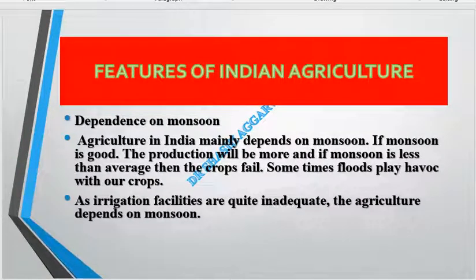Another feature is dependence on monsoon. Since irrigation facilities are not sufficient, Indian agriculture heavily depends on the monsoon. When rainfall is good, crops are good; but when there is excess rainfall there are floods, and when there is deficiency there is drought. So monsoon largely determines agricultural output.